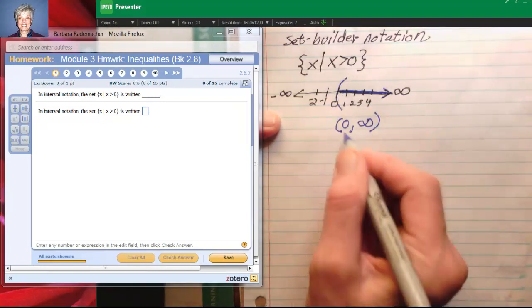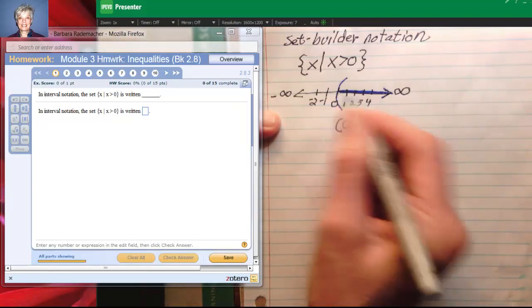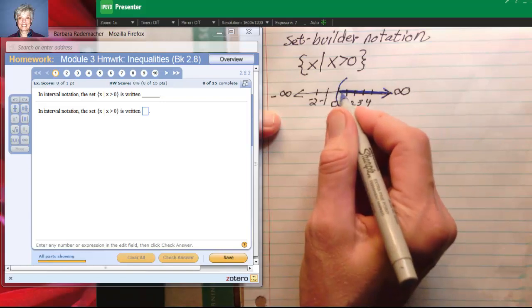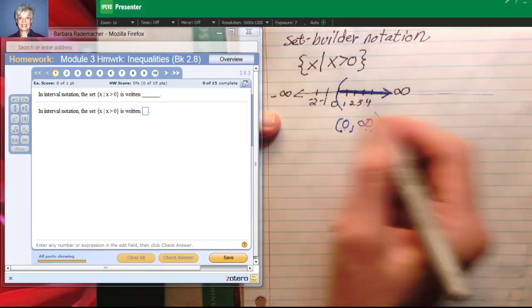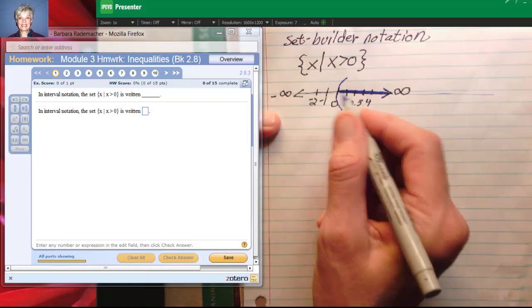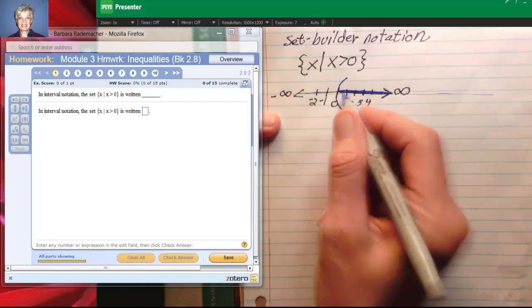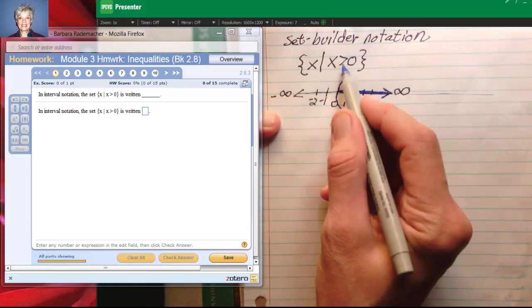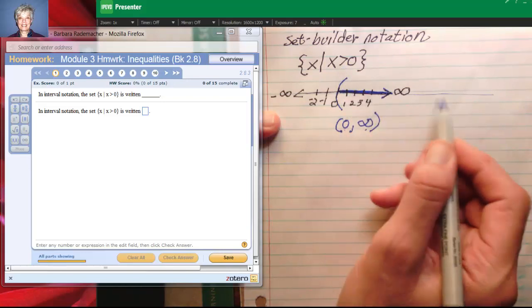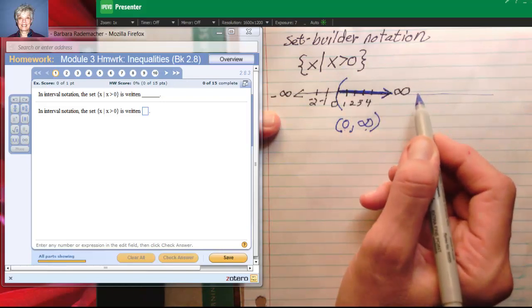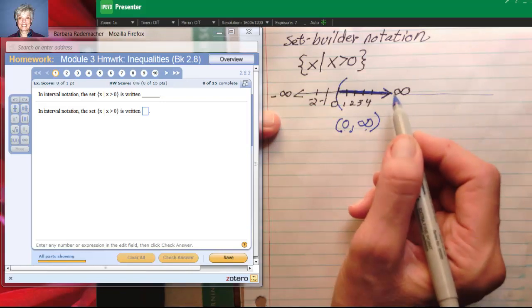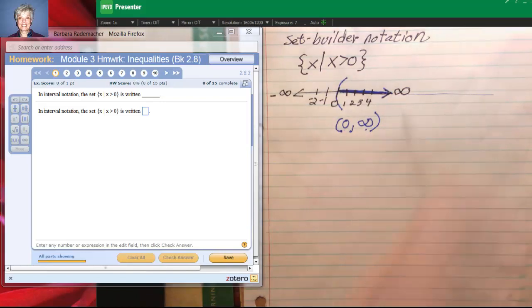Now what this says is we're talking about all the numbers in the universe that are greater than zero. Notice that greater than and to the right of mean exactly the same thing. So any number to the right of another number is greater than that number. Let's go to the next problem and see what that says.